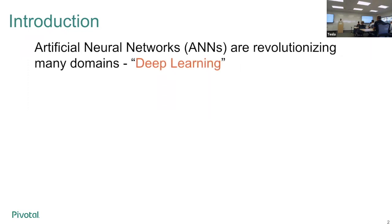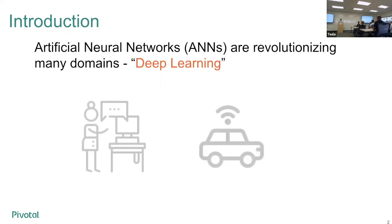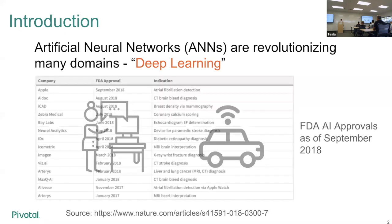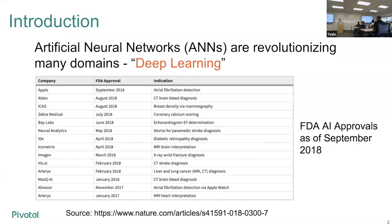Neural networks have revolutionized domains such as machine translation and autonomous driving. And recently, even for critical application domains such as medicine, there is also the adoption of deep learning-based techniques. Here's a list of FDA's AI approvals, and this list is quickly expanding.